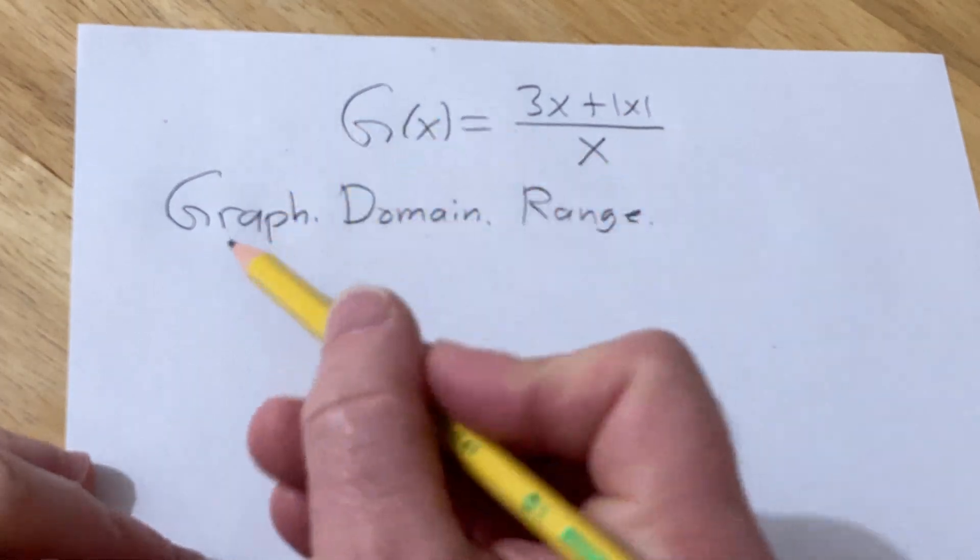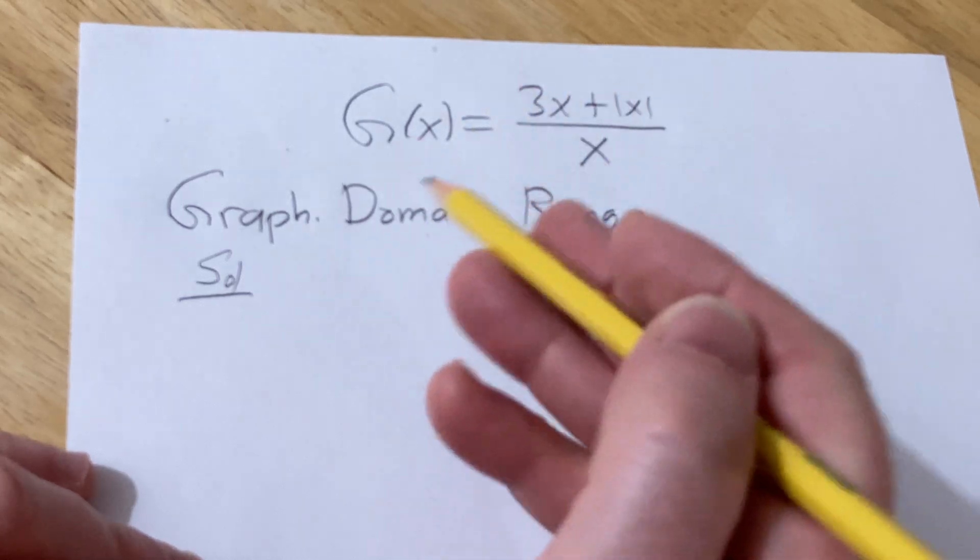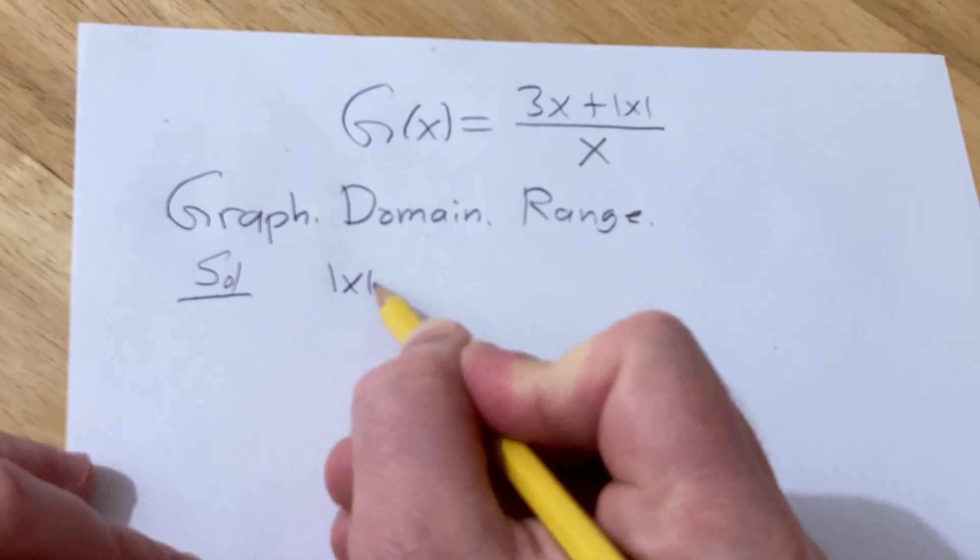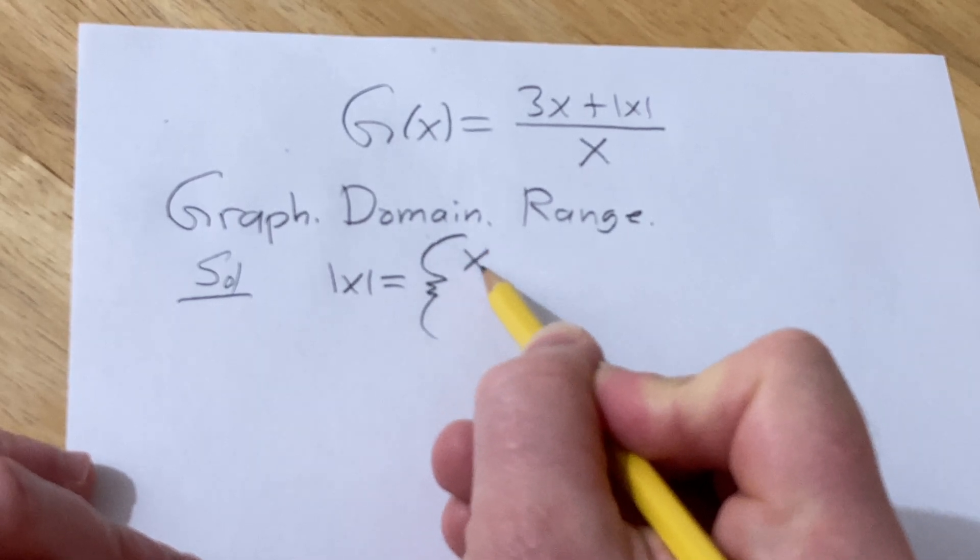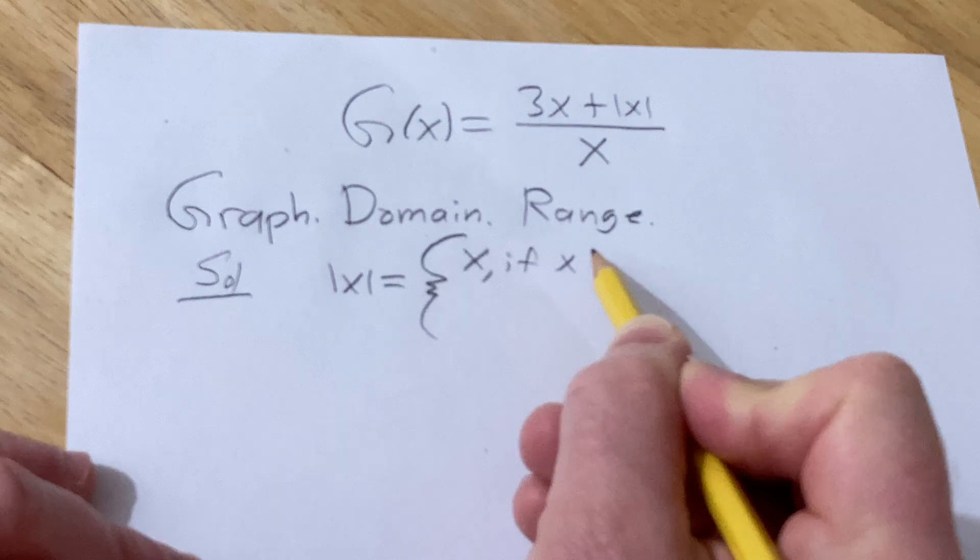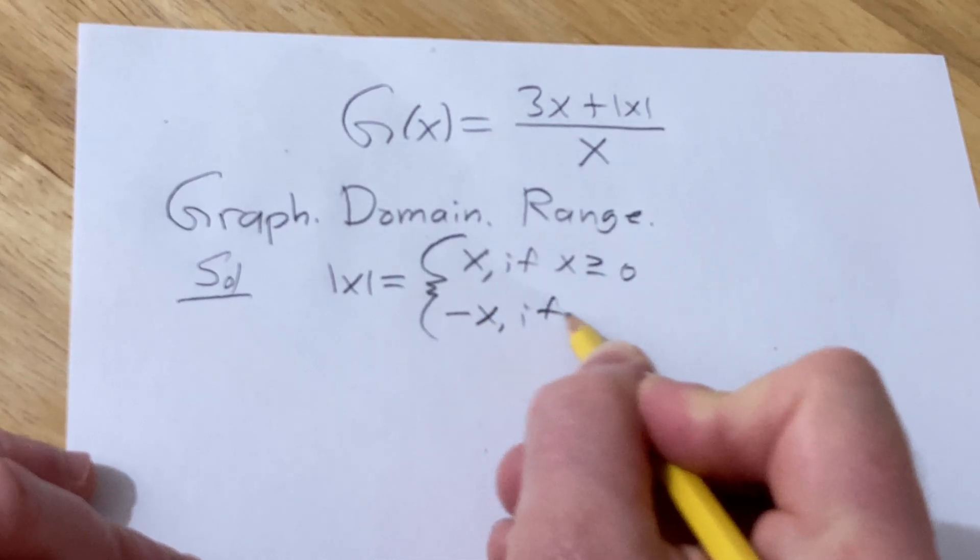The thing that makes this problem look difficult is the absolute value, so we need to deal with that. Recall that the absolute value of x is a piecewise function: it's x if x is greater than or equal to 0, and it's minus x if x is less than 0.